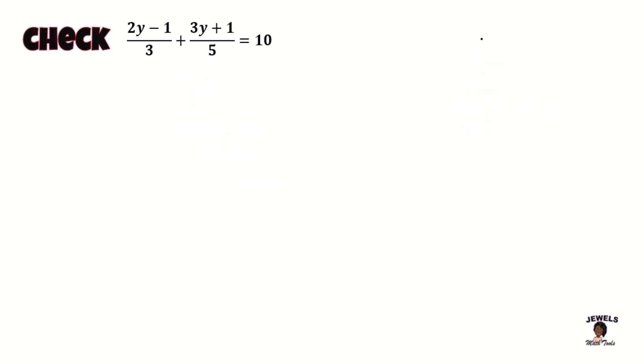So now let's perform our check. In our last part of our equation, we said that our y was equal to 8. So now we're going to be substituting y for 8 everywhere that it now appears in our equation. And once we have done that, we will then begin to simplify each of our fractions to see if everything works out and is indeed equal to our 10. So let's start with our first fraction. We know that 2 times 8 is 16 and 16 minus 1 will equal to 15 thirds. For our next fraction, we have 3 times 8 is equal to 24, and 24 plus 1 will give us 25, and that's all over 5, and it's still equal to 10.